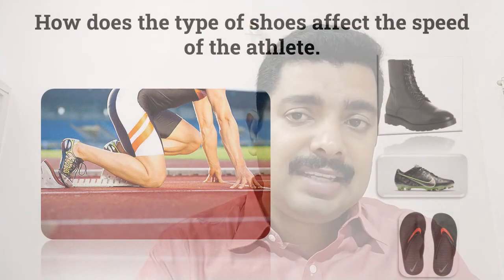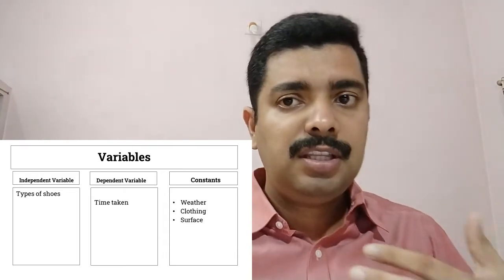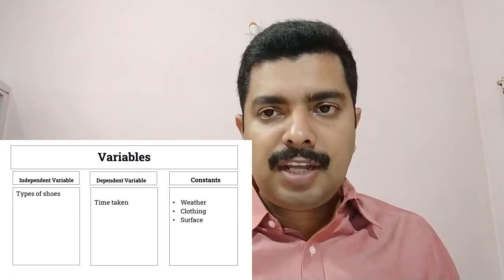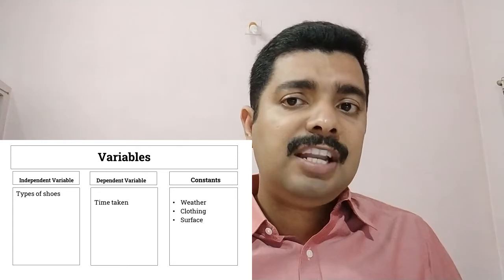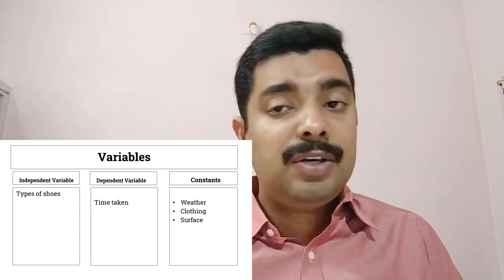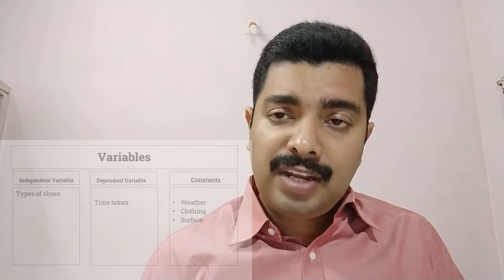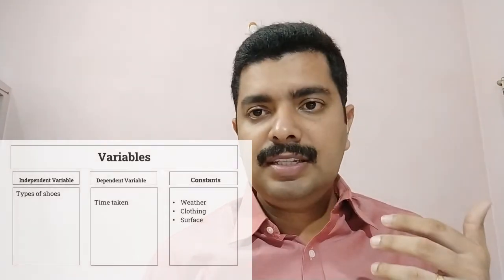The dependent variable is the time taken — this is the effect to be measured. For each type of shoe, you measure the time taken to run, say, 100 meters. The constants must also be identified: the weather must remain the same, since rain or tough weather affects speed. The clothing matters — sports gear accelerates speed while heavy or loose clothing slows the athlete. The surface or terrain must also be constant, whether it is a turf or a sports track. So the constants are: weather, surface, and clothing.